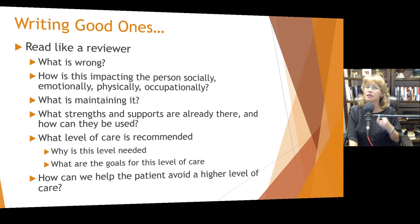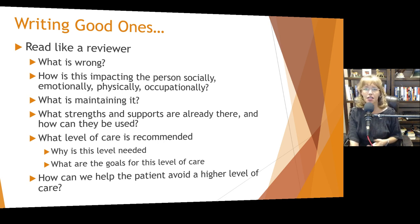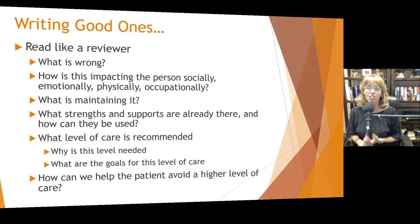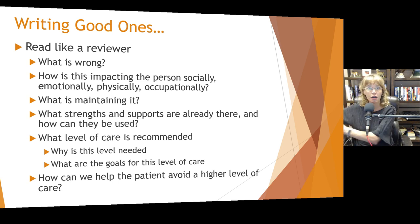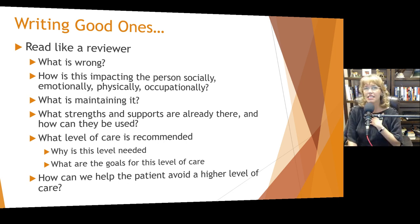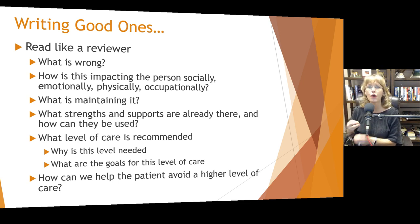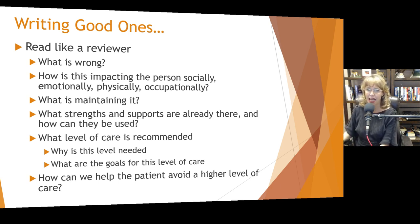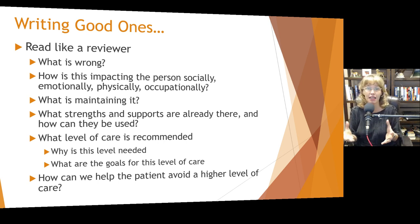To figure out if you have done a good integrated summary or reassessment, read it like a reviewer. What's wrong? How is it impacting the person socially, emotionally, physically, occupationally? What is maintaining this behavior? What do we need to address? What strengths and supports are already there and how can they be used? What level of care is recommended at this time? Remember, reassessments occur periodically throughout treatment. Why is this level of care needed? And what are the goals for this level of care? For example, if someone is ready to discharge from residential but needs to step down to intensive outpatient, what are the goals for IOP and how will we know when they're ready to step down to traditional outpatient?